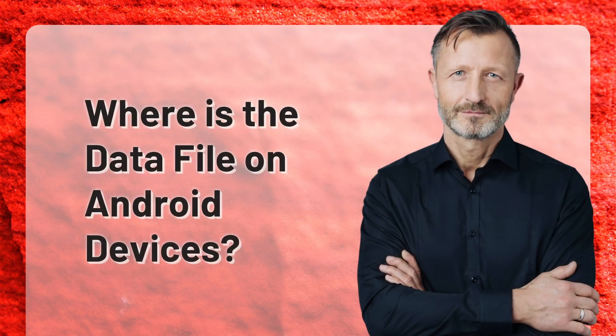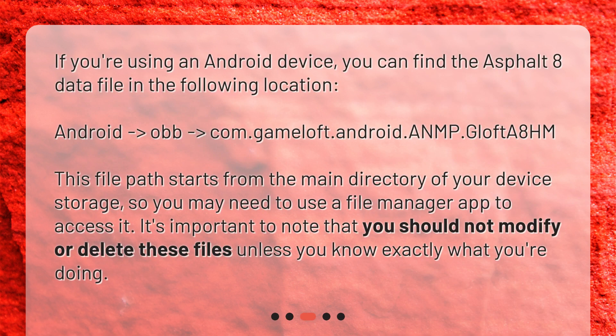Where's the data file on Android devices? If you're using an Android device, you can find the Asphalt 8 data file in the following location: Android/OBB/COM.Gameloft.Android.NMP.GloftA8HM. This file path starts from the main directory of your device storage, so you may need to use a file manager app to access it. It's important to note that you should not modify or delete these files unless you know exactly what you're doing.